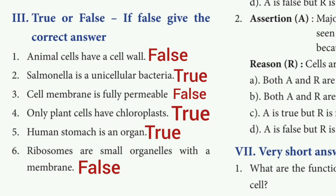Fourth one: only plant cells have chloroplast. The answer is true. Fifth one: the human stomach is an organ. The answer is true. Sixth one: ribosomes are small organelles with their own membrane. The answer is false.